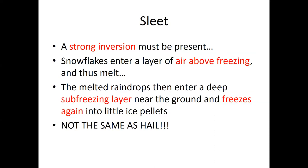Now for the other types of precipitation — the ones you may not have experienced, or didn't realize you had. Sleet is one of these. In order for sleet to exist, there must be a strong inversion present — that's when temperatures rise as you go up in the atmosphere. You get very cold air near the surface and warmer air aloft. Snowflakes falling from clouds enter that warm layer and melt into raindrops, then as they fall close to the surface they enter that cold layer and immediately freeze back into ice pellets. This is not the same as hail, which forms through a completely different process.